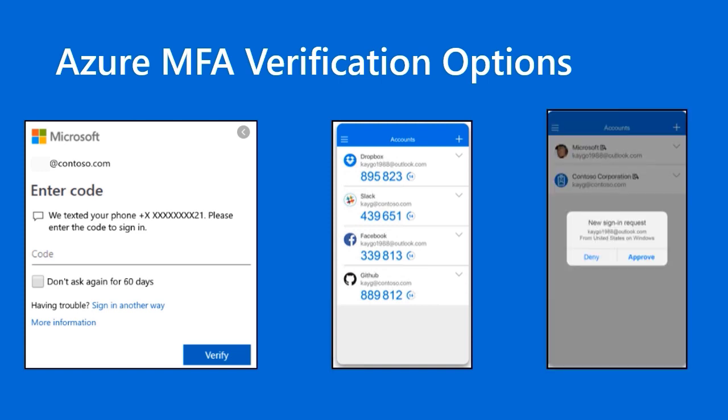The only option with Azure MFA that does require Microsoft Authenticator — available for both iOS and Android — is the push option, the passwordless option. As you can see on the right side of this slide, the user sees a new sign-in request push notification on their device. If you are in fact attempting a sign-in, you will approve it. But if you're not initiating a sign-in and you see a message like this, you better notify your support desk immediately because your password has been compromised.